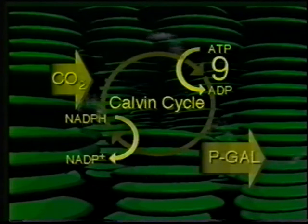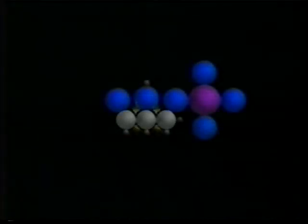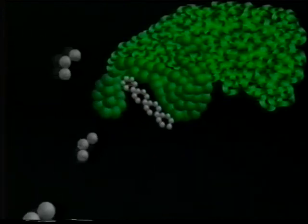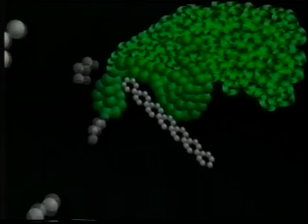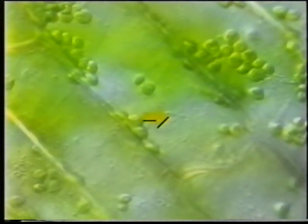It takes nine ATPs and six NADPH energy carriers to drive the synthesis of one P-gal, and much of this energy is stored in the P-gal molecule. Under the influence of enzymes in the stroma, molecules of P-gal are assembled into larger energy storage molecules such as starches and fatty acids. Exported into the cytoplasm, P-gal can be converted into six-carbon sugars such as fructose and glucose. These fuel molecules are broken down in another cell organelle, the mitochondrion.